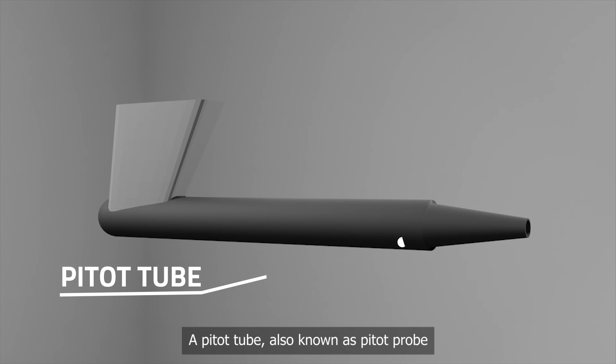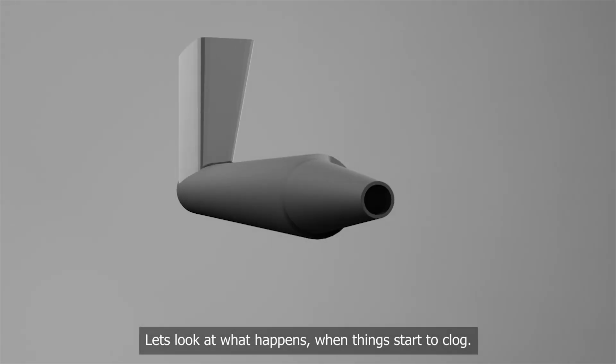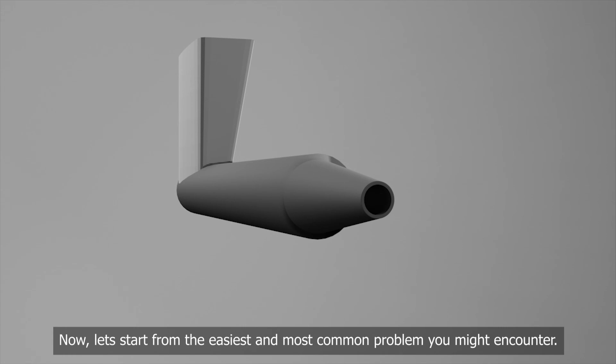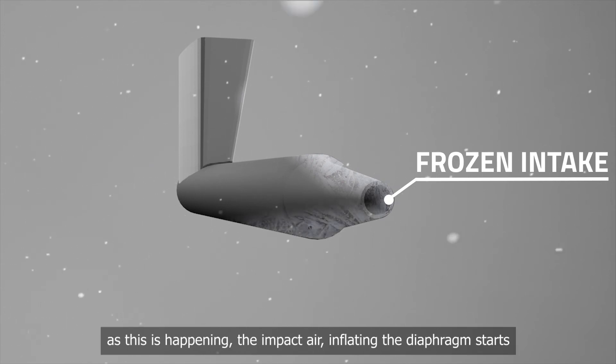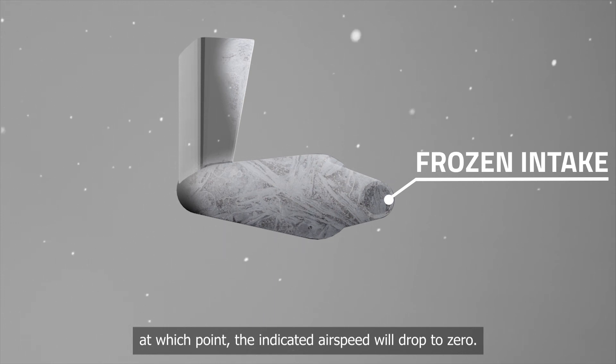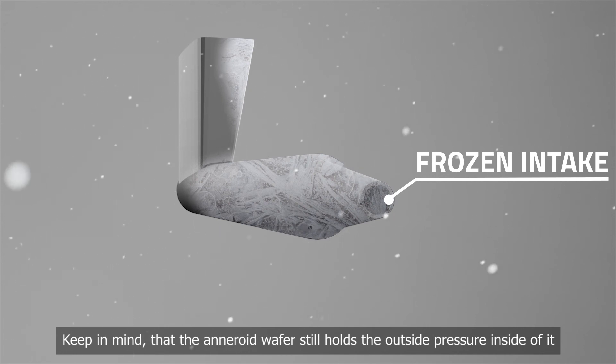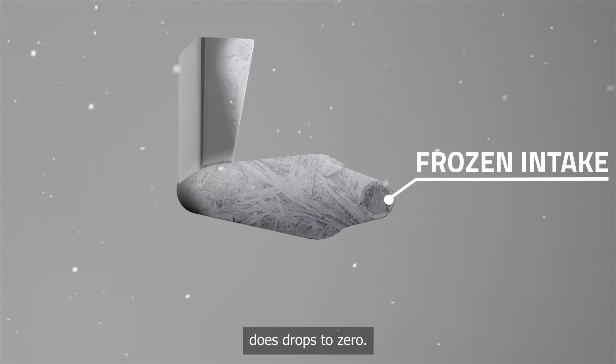Pitot tube. A pitot tube, also known as pitot probe, is a flow measurement device used to measure fluid flow velocity. Let's look at what happens when things start to clog. Now, let's start from the easiest and most common problem you might encounter. Say that you're flying and it starts to snow. As you can see from the animation, as the snow starts to accumulate on the pitot tube, the opening starts to freeze over. As this is happening, the impact air inflating the diaphragm starts to bleed out from the drain hole and the indicated airspeed starts to drop until the impact air inlet is fully clogged. At which point, the indicated airspeed will drop to zero. Keep in mind that the diaphragm still holds the outside pressure inside of it, but this is equal to the pressure inside the chamber of the instrument. Therefore, the reading of the airspeed indicator does drop to zero.